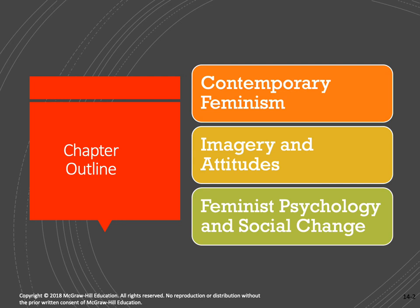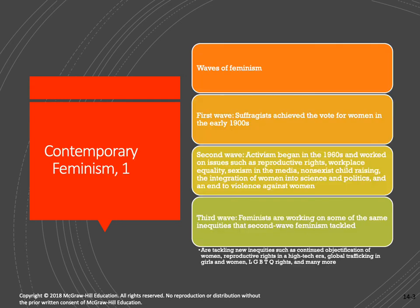A quick reminder of the waves of feminism: the first wave started when suffragists were fighting for the right for women to vote in the early 1900s. The second wave of feminism really began in the 1960s and worked on issues such as reproductive rights, workplace equality, sexism in the media, non-sexist child raising, integrating women into science and politics, and addressing the need to end violence against women like battering.